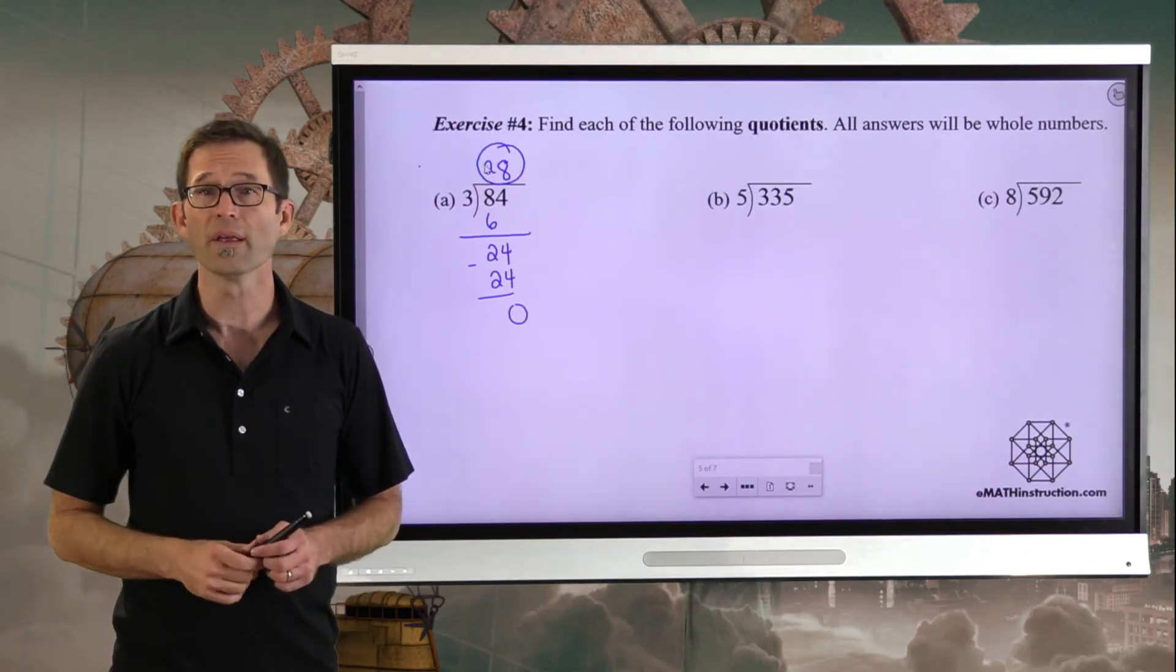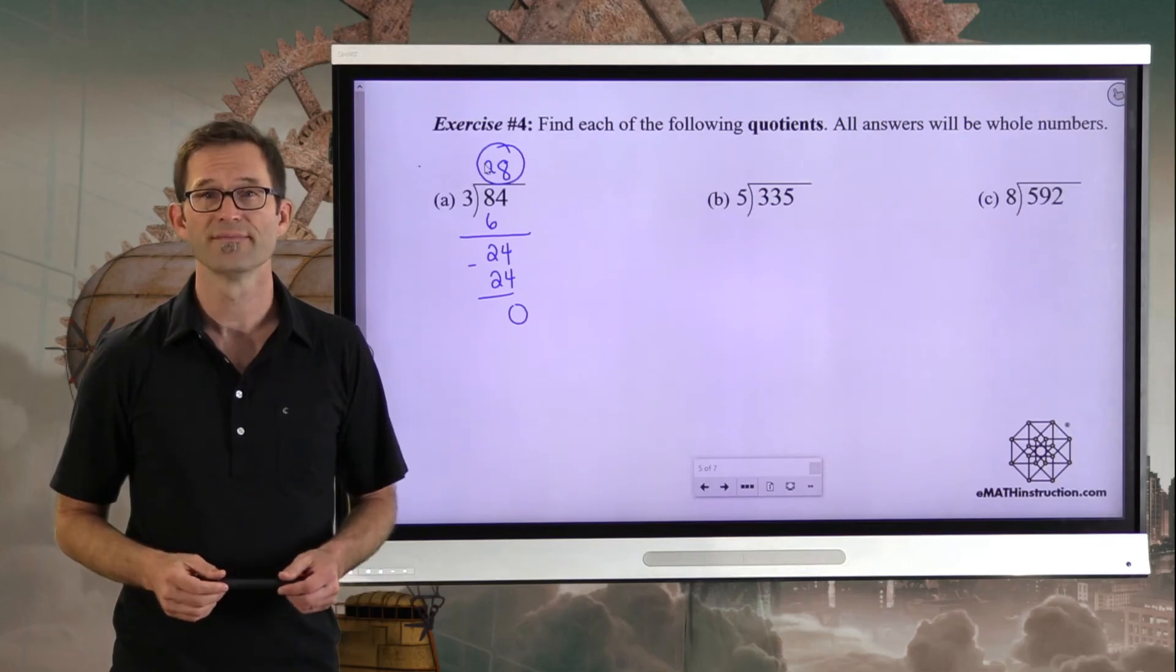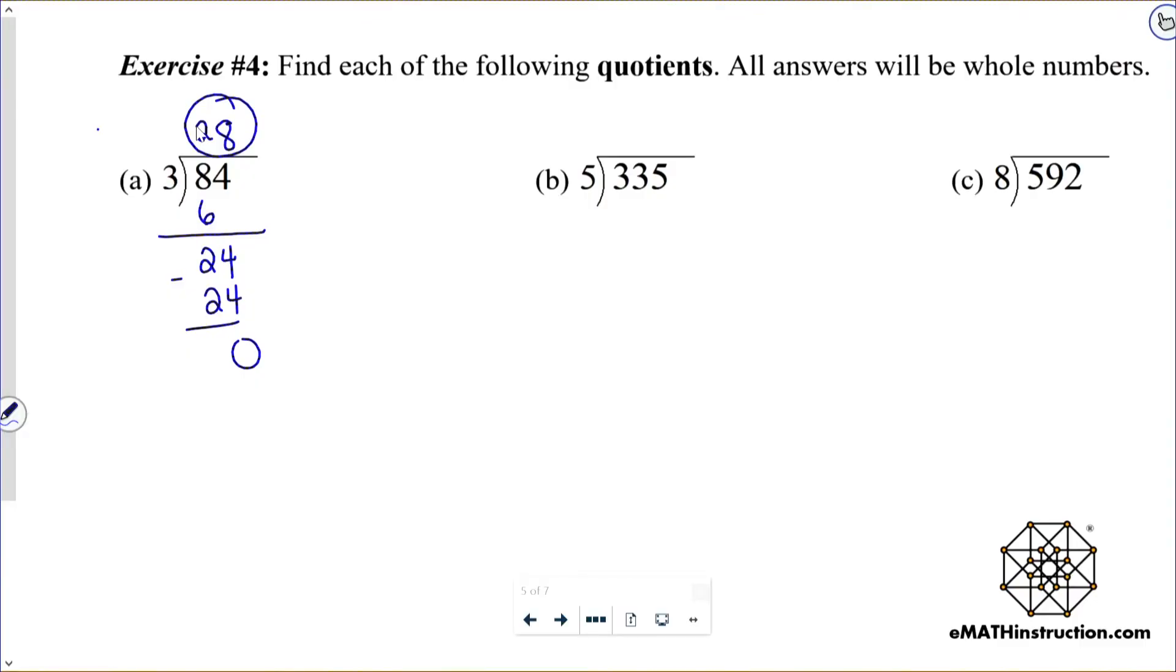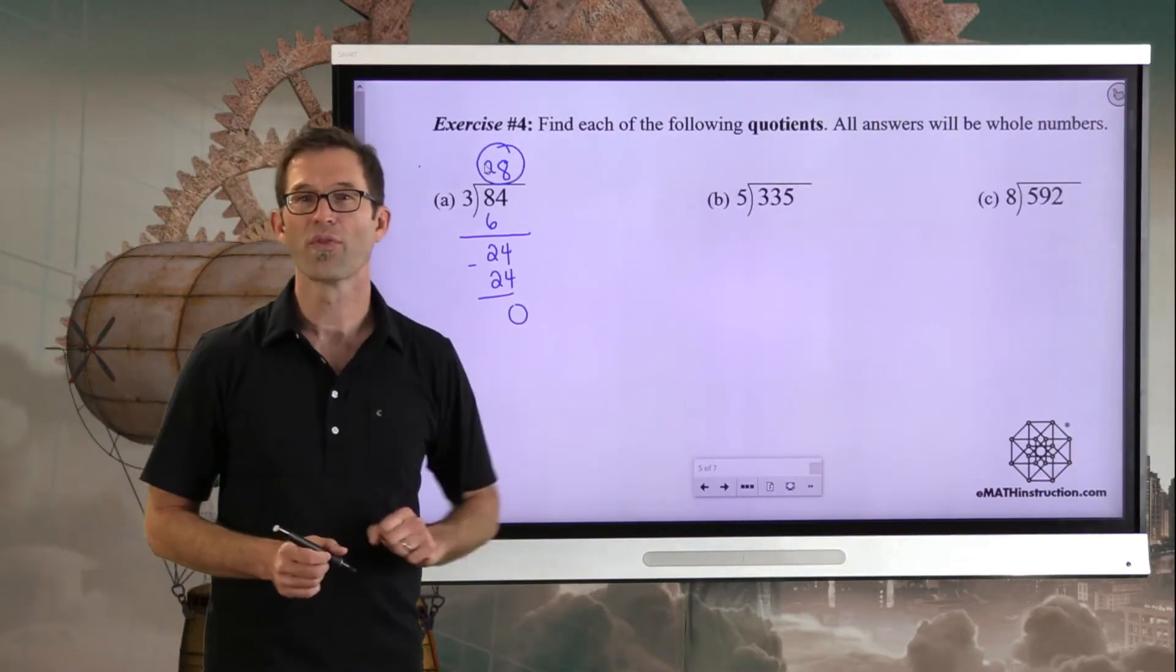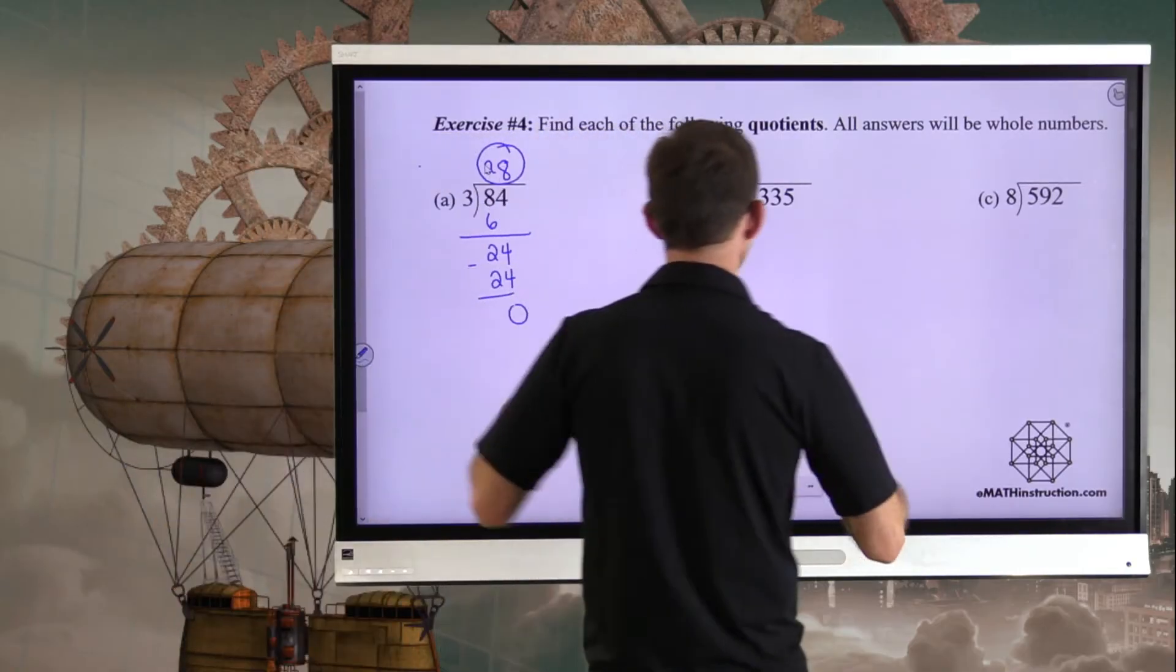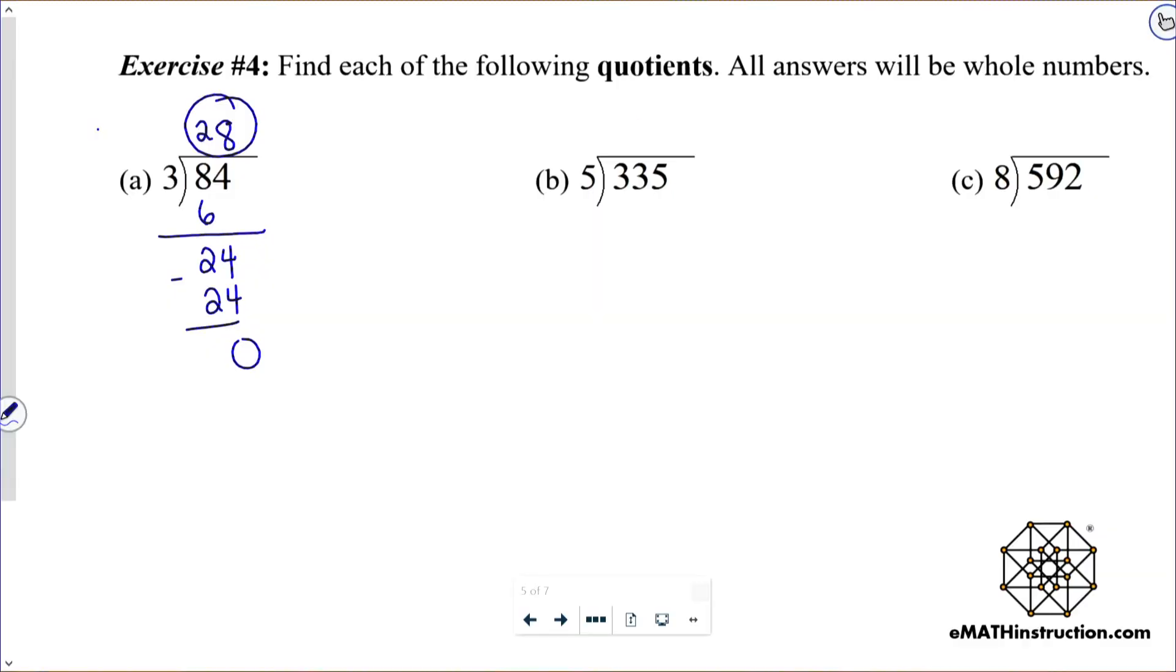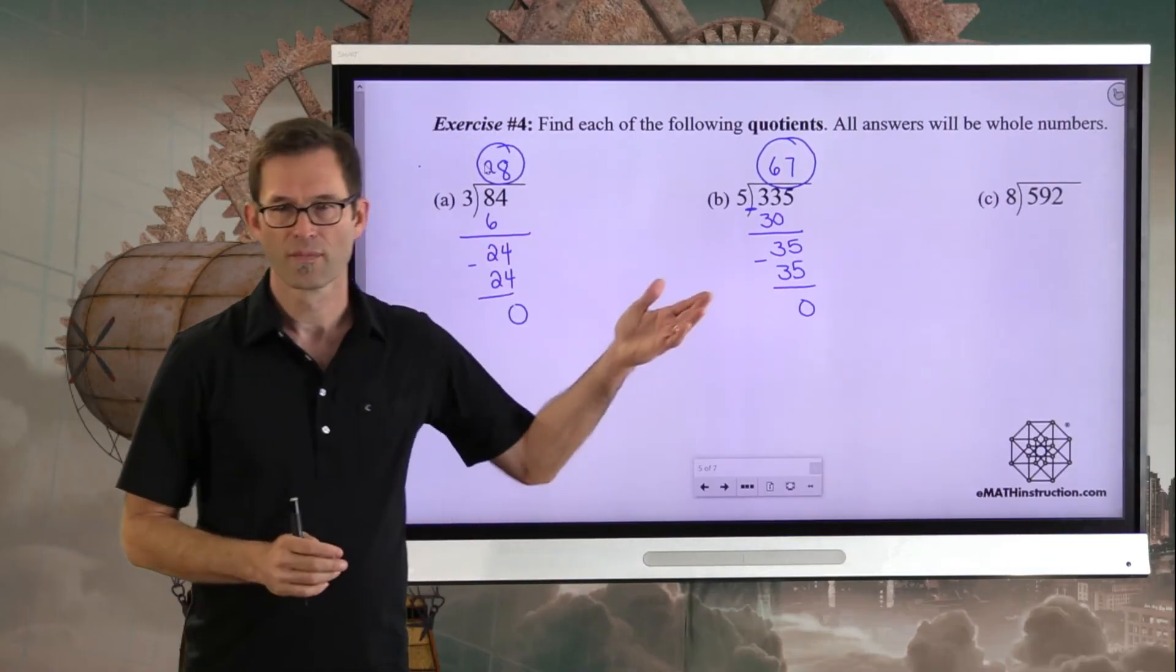Why don't you pause the video now for a few minutes and figure out the answers to letter B and C? Let's go through them. 335 divided by five. How many times does five go into 33? Well, it goes in there six times, because six times five is 30, which when we subtract, leaves us with just three as a remainder. I then drop my five down, and I ask how many times does five go into 35? And that's seven times. Seven times five is 35. Subtract and I get zero. So 335 divided by five is 67.